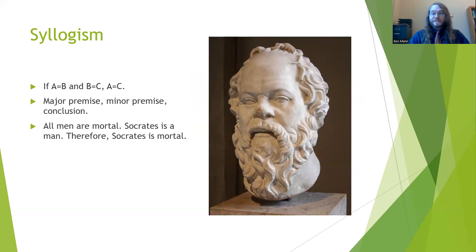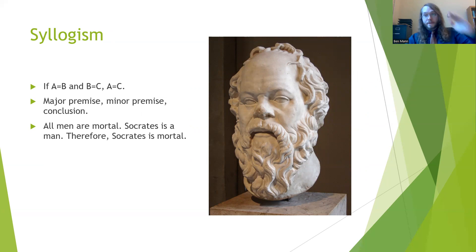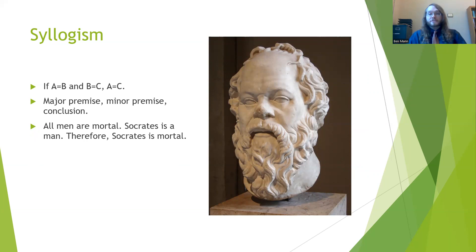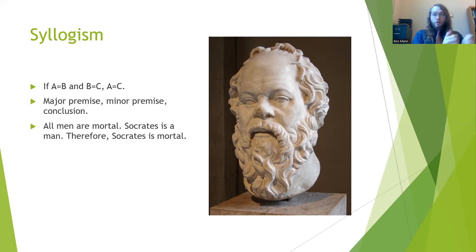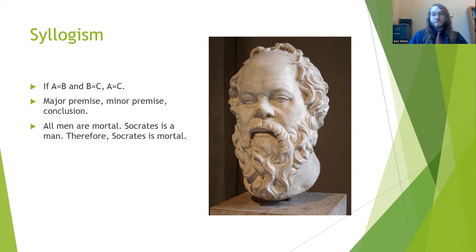One of the most famous types of logical arguments is the syllogism. The syllogism assumes, in a mathematical way: if A equals B and B equals C, therefore A equals C. That is, there's a major premise, a minor premise, and a conclusion reached as a result of putting those ideas together. For instance: all men are mortal; Socrates is a man; therefore, Socrates is mortal. A classic example of utilizing the syllogism to bridge different parts of an argument together.